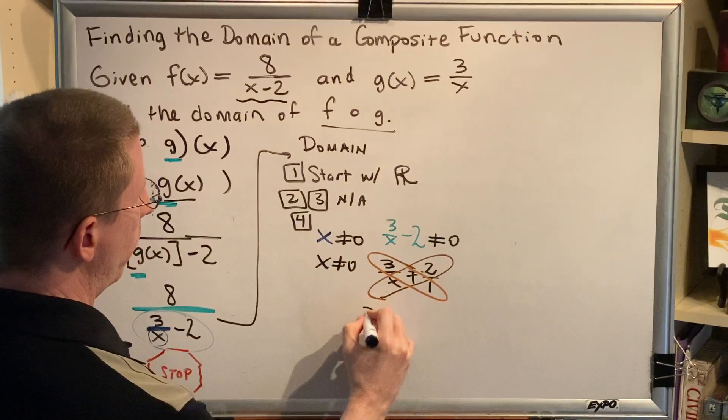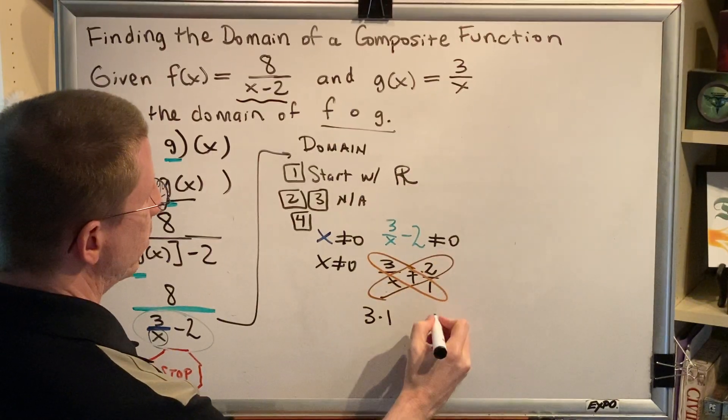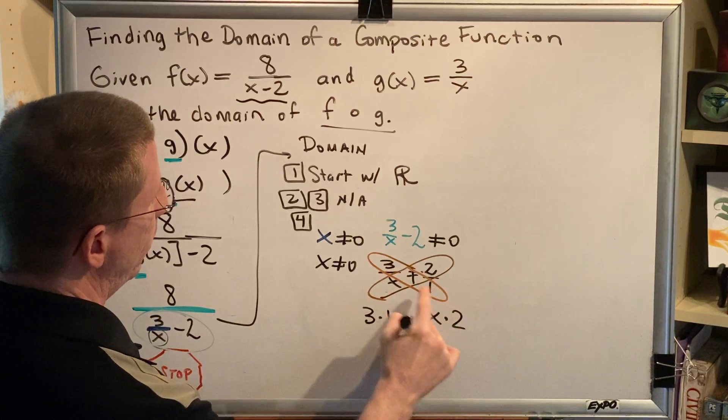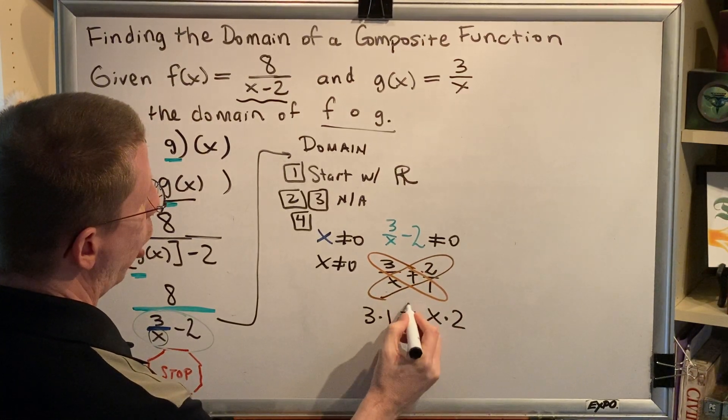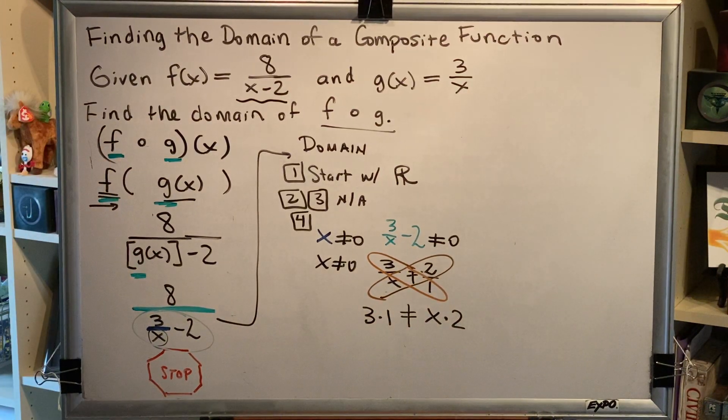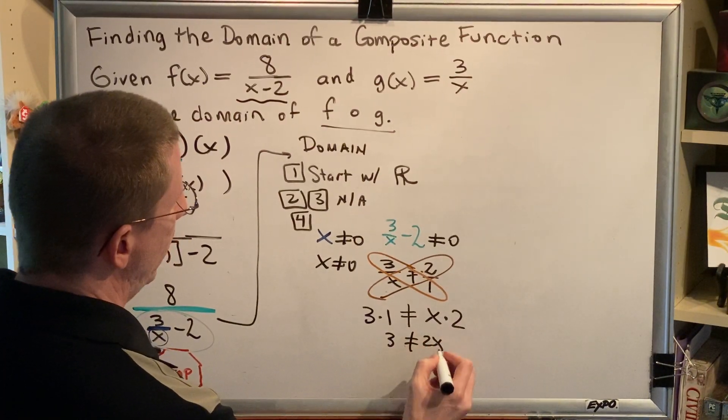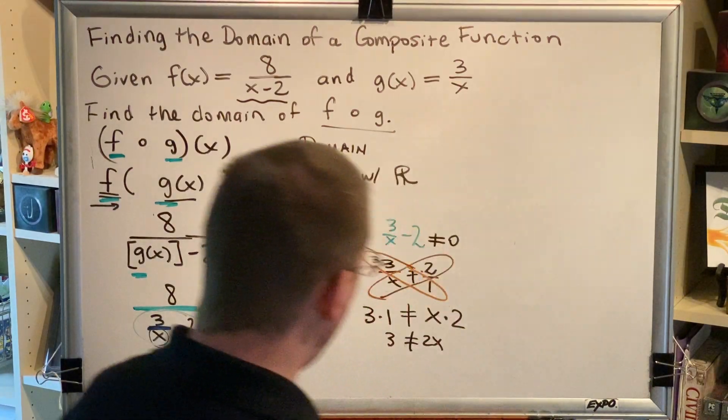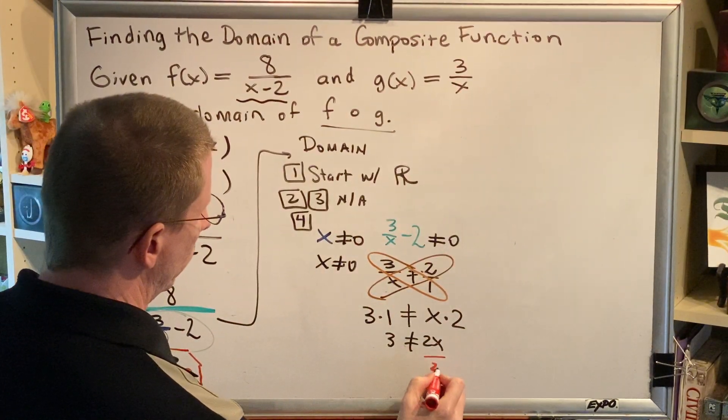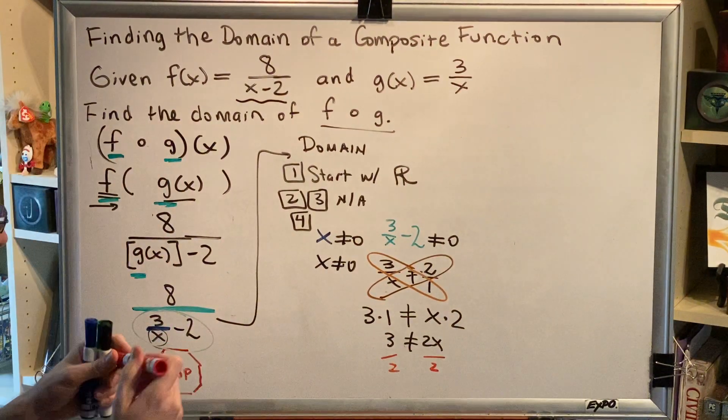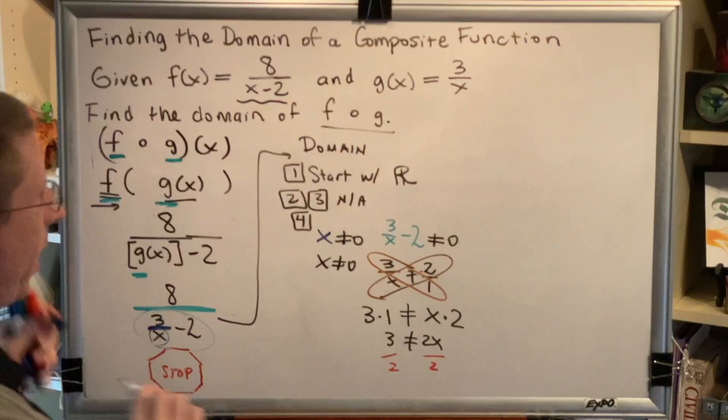So three times one will be on the left hand side, x times two will be on the right hand side, and the symbol that appears here is repeated in between. This tells me that three is not equal to 2x. And by dividing by two on both sides, I get the result x is not equal to three halves.